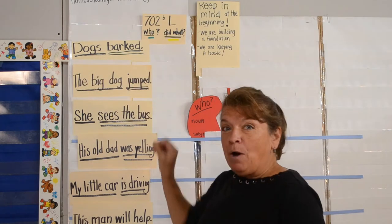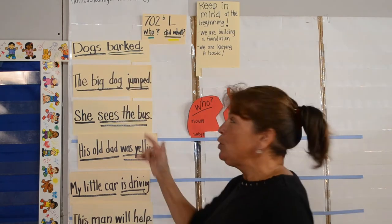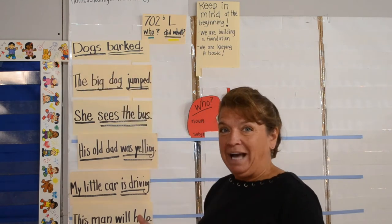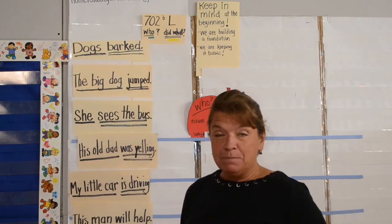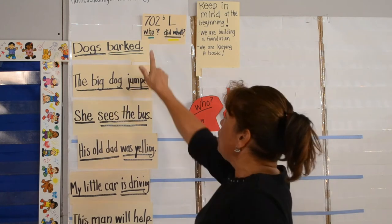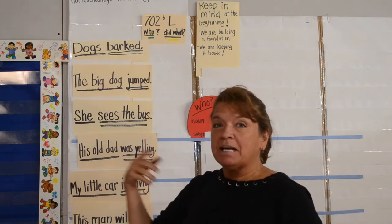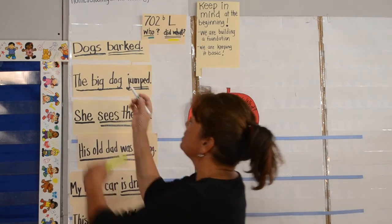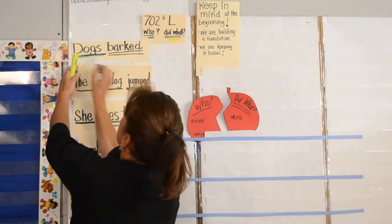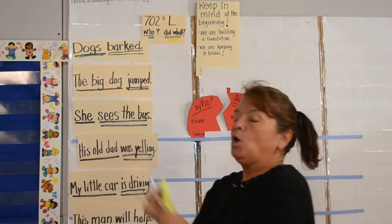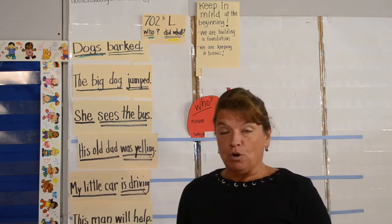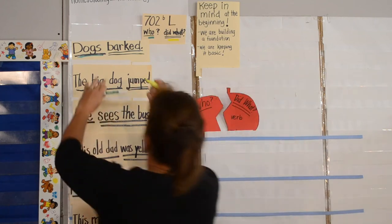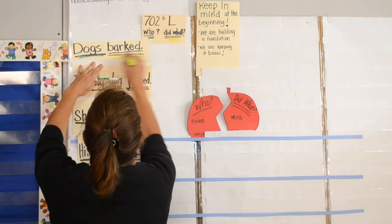Dogs barked. Our complete who was 'dogs.' Our complete did what was 'barked.' Very simple sentence. We're looking for the noun in the complete who — that's 'dogs,' so we're going to underline dogs green. The verb in the complete did what is 'barked,' so we underline it yellow.